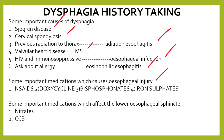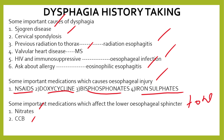Also ask about allergies such as eosinophilic esophagitis, and some important medications that cause esophageal injury and can present as dysphagia: NSAIDs, doxycycline, bisphosphonates, and iron sulfate. Some medications which affect the lower esophageal sphincter tone include nitrates and calcium channel blockers. Include all these factors in the dysphagia history as well.